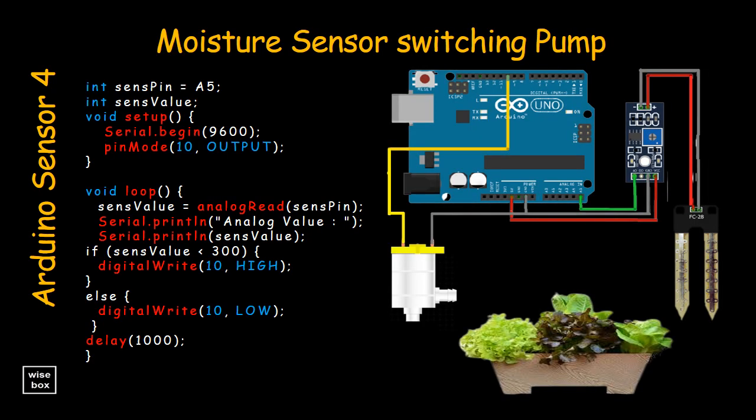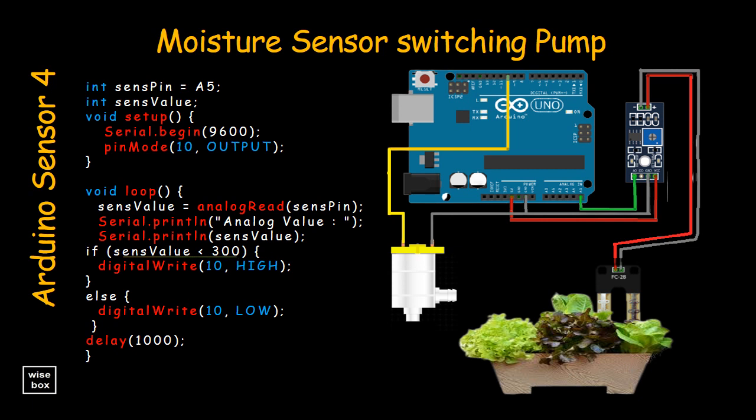In this system, moisture sensor senses the moisture level of the soil. If soil is dry, then sensor senses low moisture level and automatically switches on the water pump to supply water to the plant.